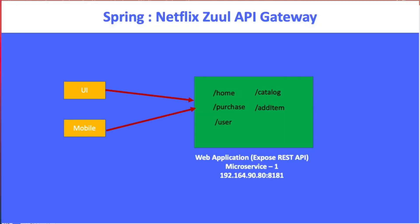Before we start the API gateway, let me explain what the problem is if we don't have it. Suppose you have one web application as a microservice with many REST APIs exposed, and here is the UI or mobile phone. If the UI wants to show data or perform operations, they will call this API. To call this microservice, they need the IP address, port, and the request mapping - like access home, catalog, or add item. It's manageable with one microservice, but there's a security problem.